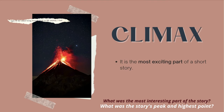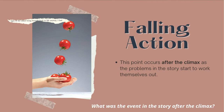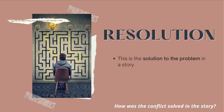Next, we have Climax. It is the most exciting part of a short story. This is the part in the story when important decisions are made or important things are discovered. What was the most interesting part of the story or what was the story's peak and highest point? It is definitely its climax. Fourth, we have Falling Action. This point occurs after the climax as the problems in the story start to work themselves out. The excitement becomes less and less as the conflict is resolved. What was the event in the story after the climax? And last, we have Resolution. This is the solution to the problem in a story. The solution may not be what you hoped for, but as long as it fits the story in tone and theme, the conflict has been resolved. How is the conflict solved in the story? That is the resolution part of the plot.